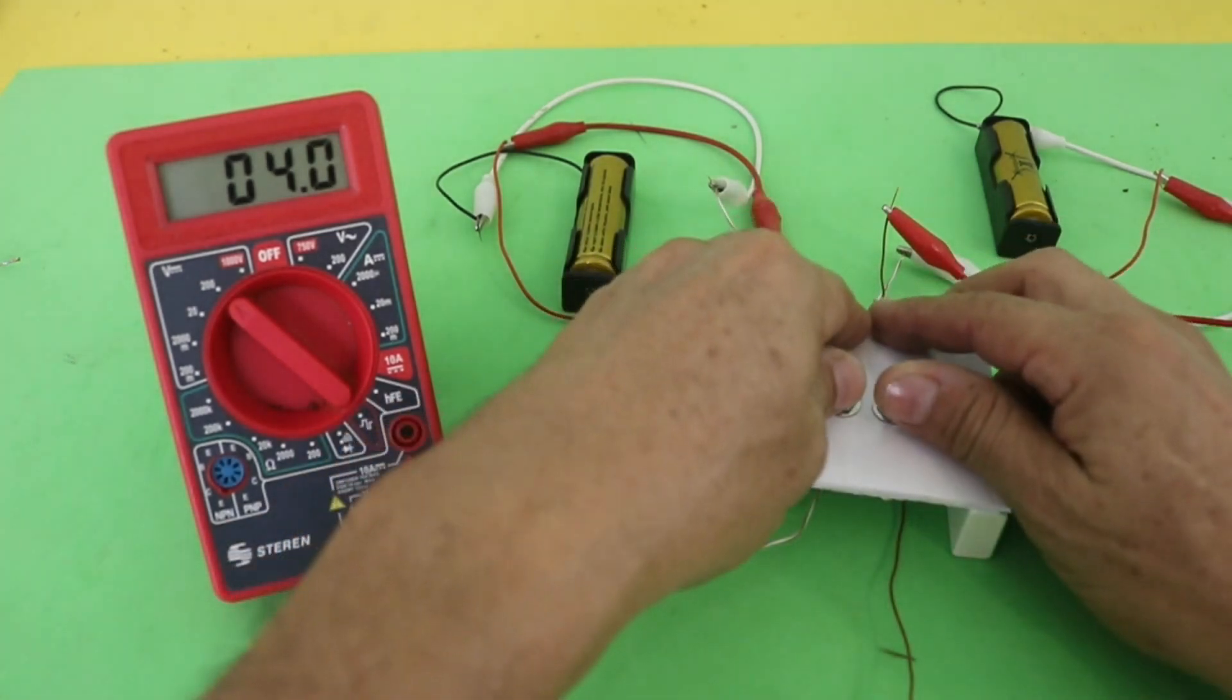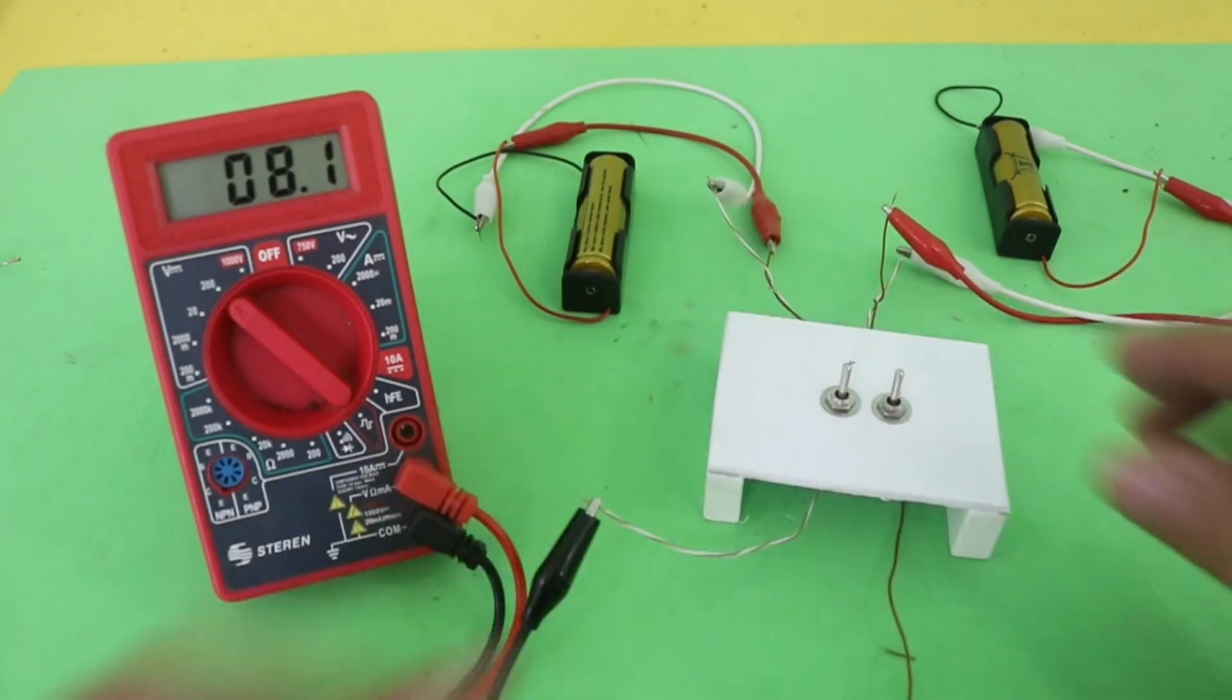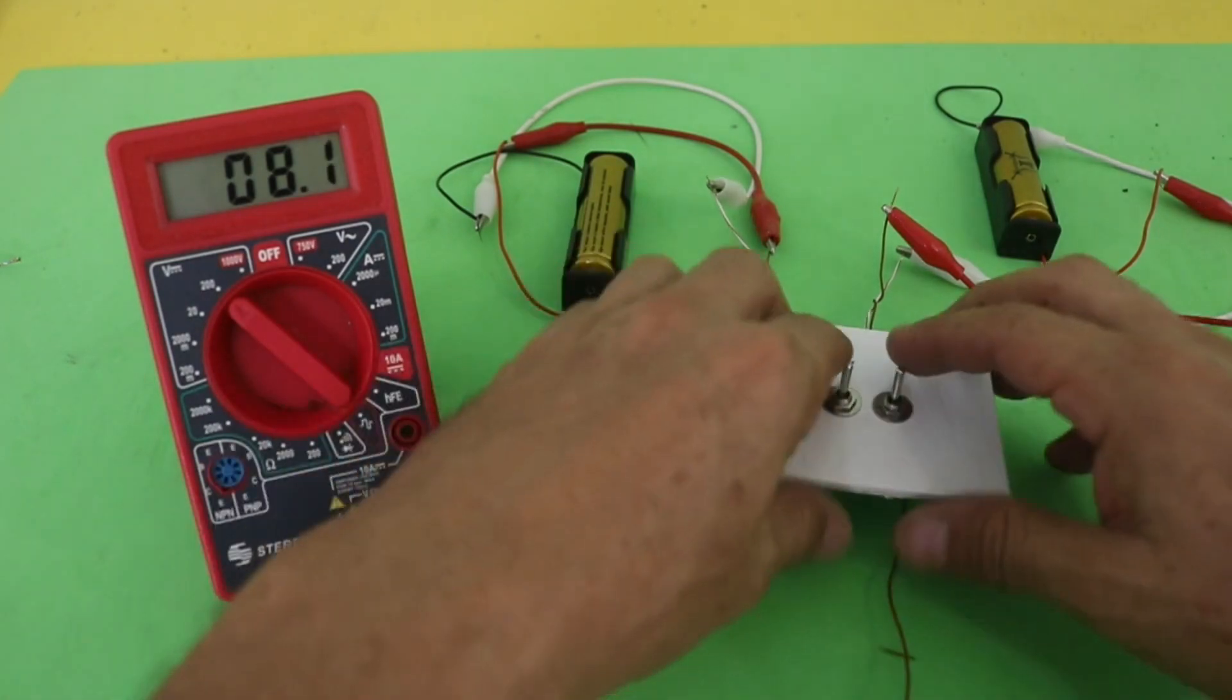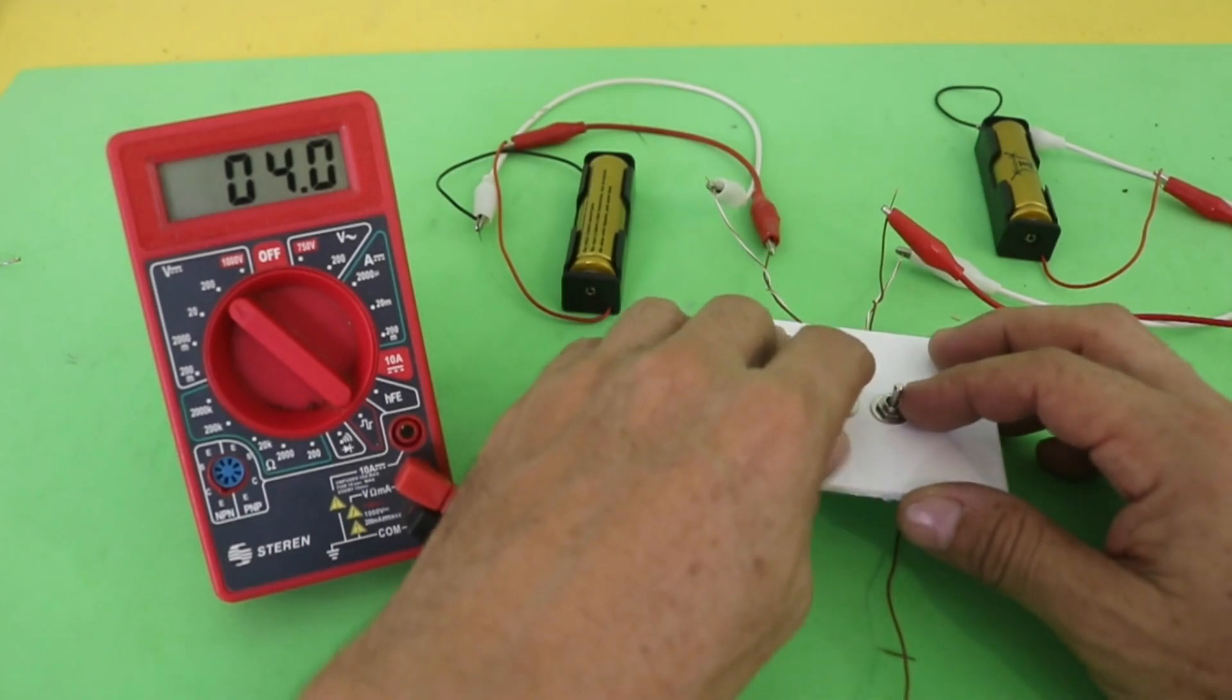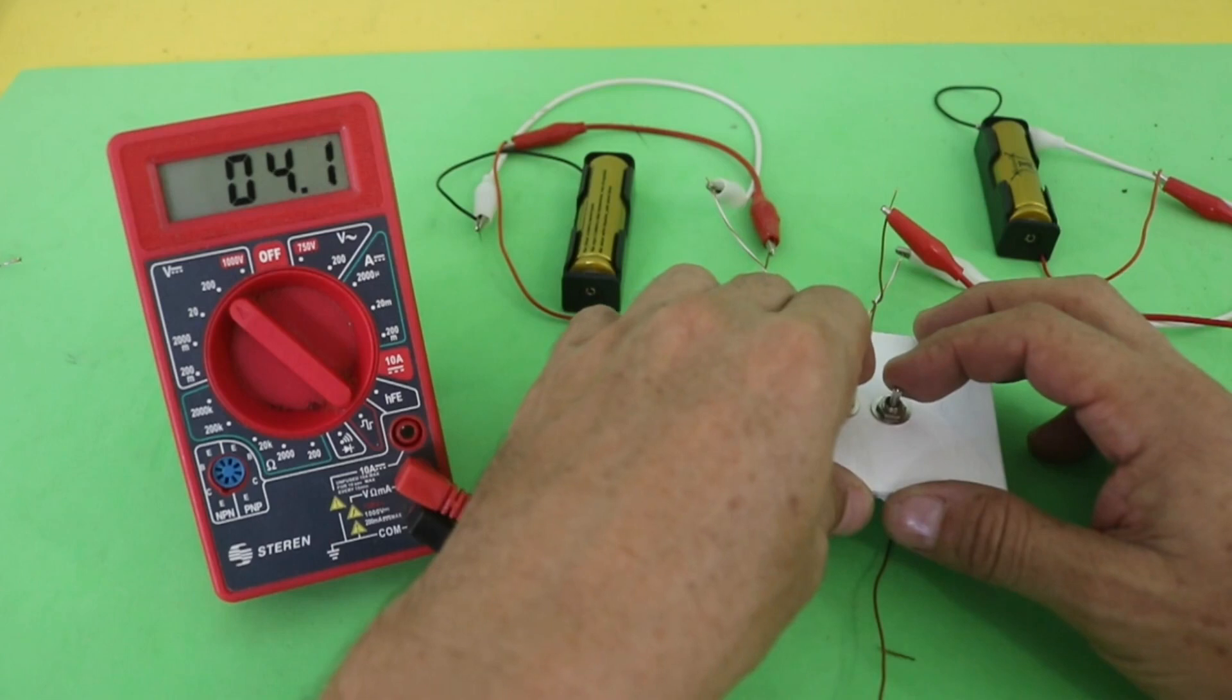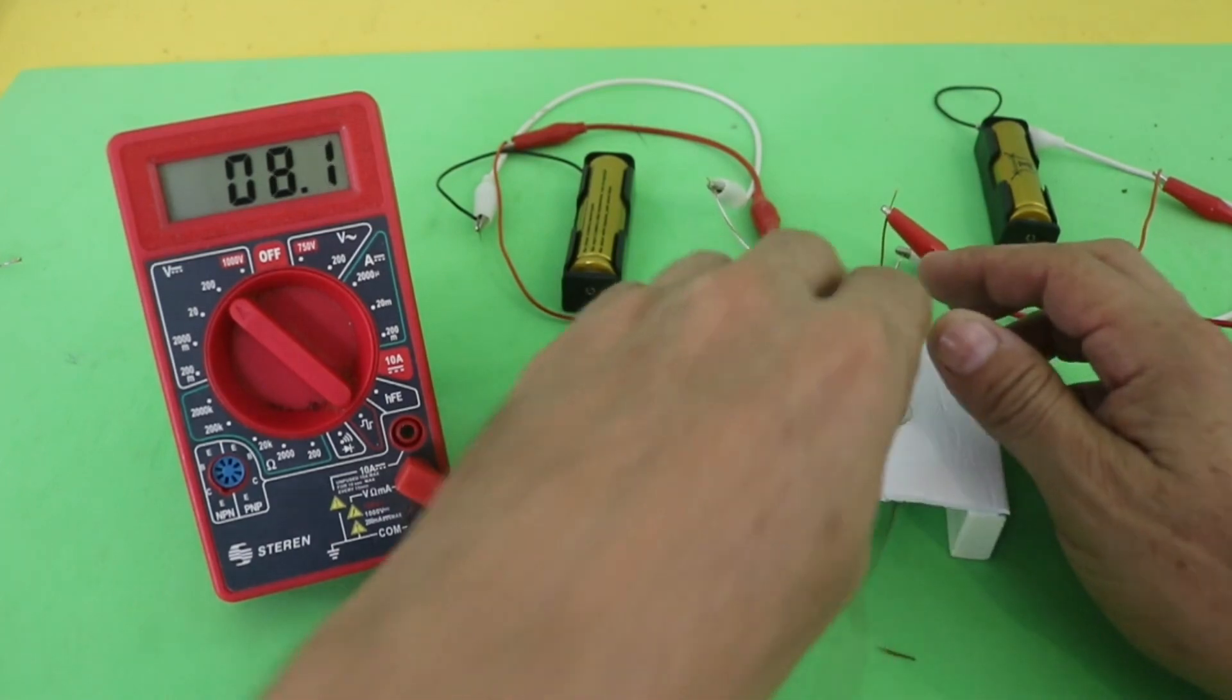Now, if we flip the switches, now they are in series and we have the sum of the voltages. So in this simple way, you can change from parallel to series and vice versa.